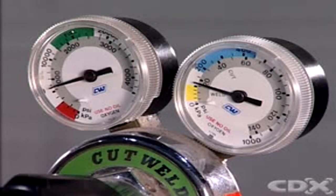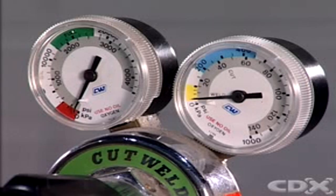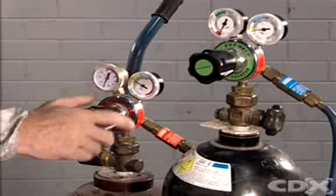This will purge any gas that may still be in the system and the gauges should both drop back to zero. Repeat this procedure with the acetylene cylinder.